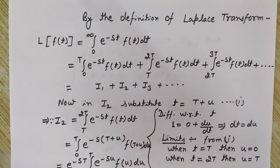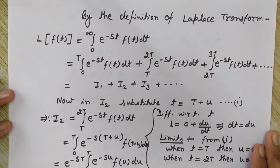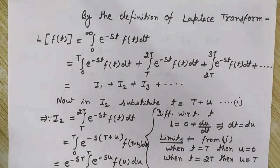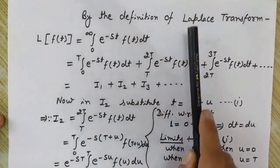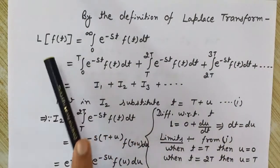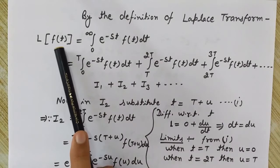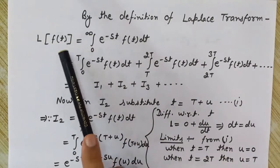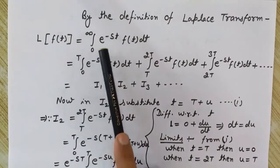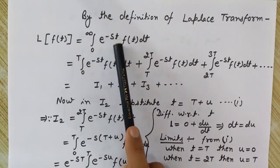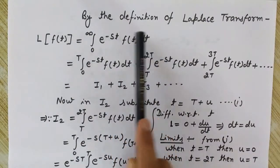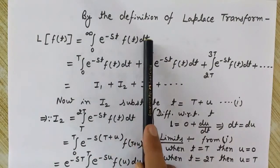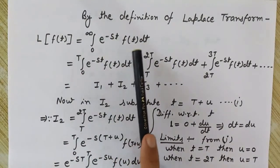Now let's see the derivation of the Laplace transform of the periodic function. By the basic definition of Laplace transform, the Laplace transform of f(t) is the integral from 0 to infinity of e to the power minus st times f(t) dt.